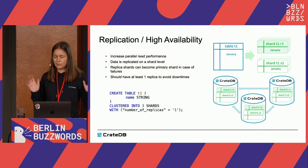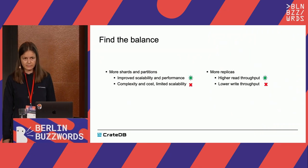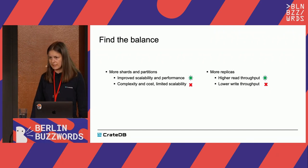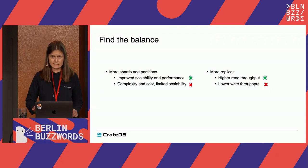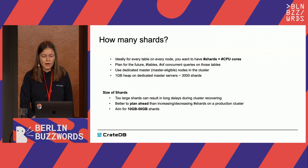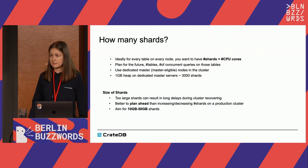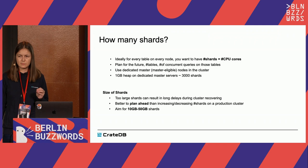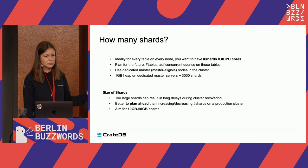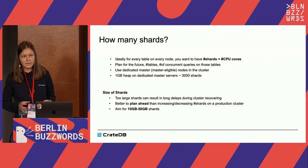When creating a table, it is very important to understand how data get distributed across the cluster, and here we need to find a balance: what is the right number of shards, the right number of partitions, and how much replication do we need? This all depends on your use case and dataset. To really utilize the parallelism of a distributed database, you should aim for as many shards as the number of CPU cores you have in your cluster, because that is where the best performance comes from.